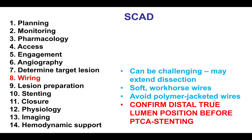If PCI is selected, step number 8 is wiring, which can be challenging because the wire may not be able to get through the area of dissection. It is preferred to use soft workhorse guide wires, because polymer-jacketed wires might actually enter into the sub-intimal space and extend the dissection. It is important to confirm that a distal true lumen wire position has been achieved before performing balloon angioplasty and stent placement. If this is not possible, then balloon angioplasty and stenting should not be performed.